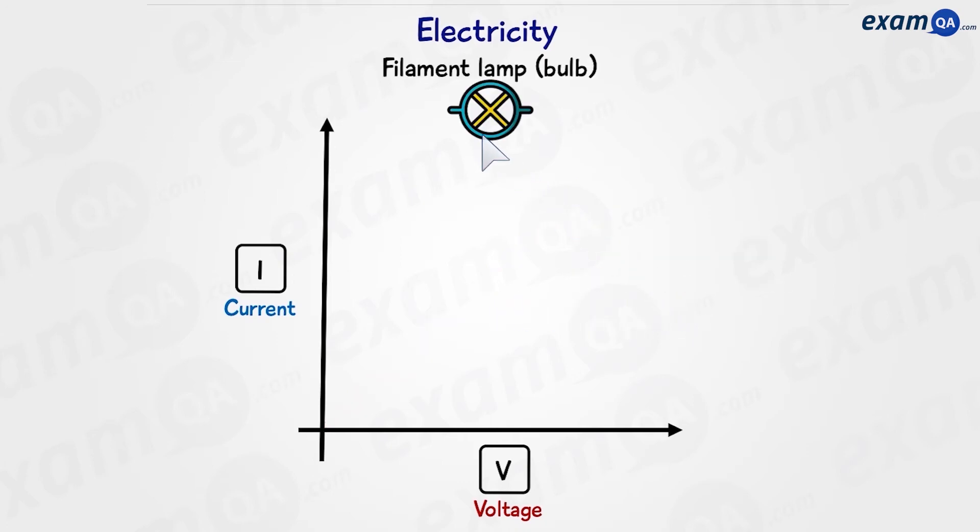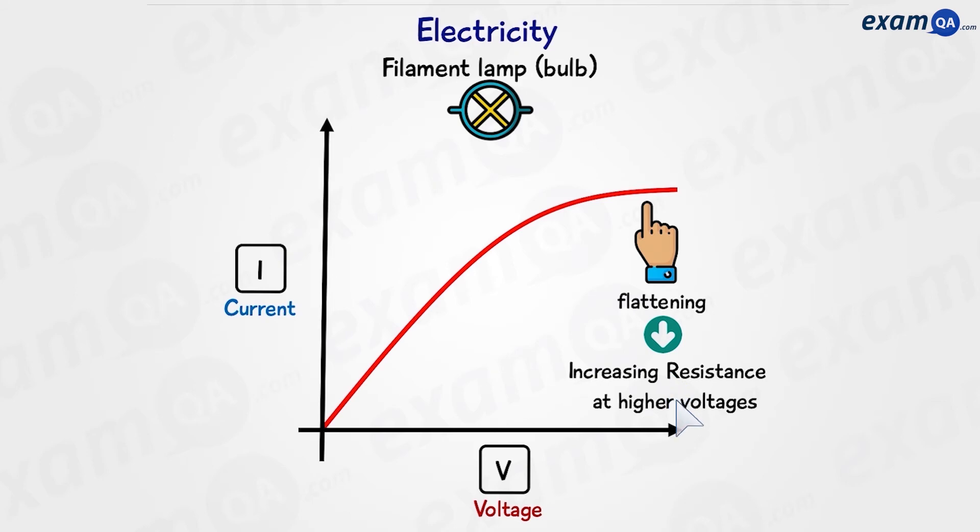The filament lamp, or the bulb, will look something like this. We can see here that it's beginning to flatten at higher voltages. This means that there's increasing resistance at higher voltages.